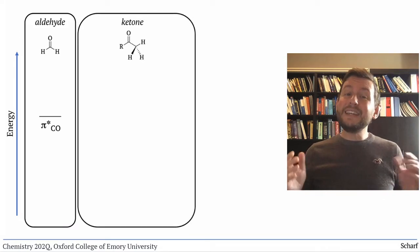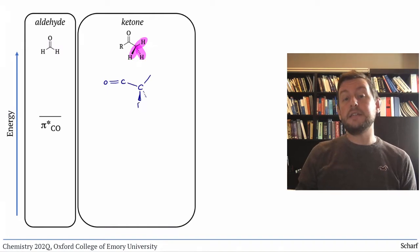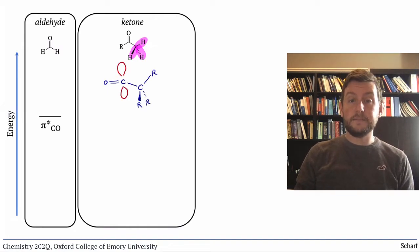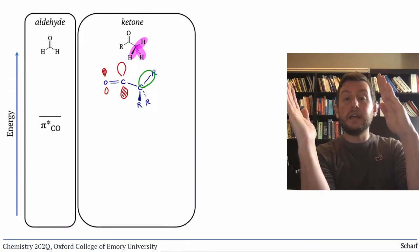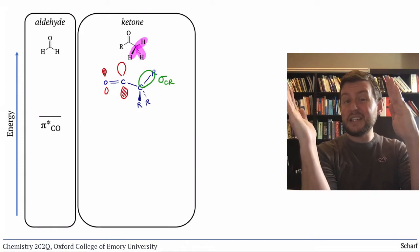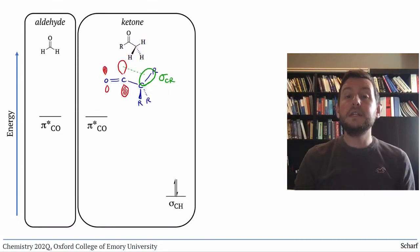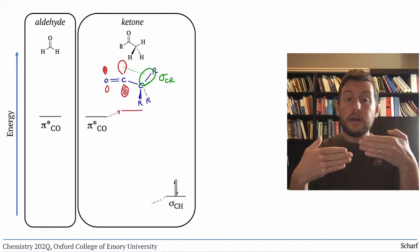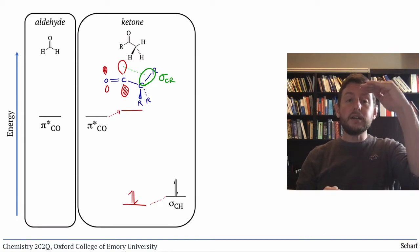If we move to a ketone, there are alkyl groups adjacent to the CO pi star orbital. And those alkyl groups have filled sigma bonding orbitals, either CC or CH, that can overlap with the CO pi star. Whenever a filled orbital overlaps with an empty one, we get new orbitals, one lower in energy where the electrons go, and one higher in energy.